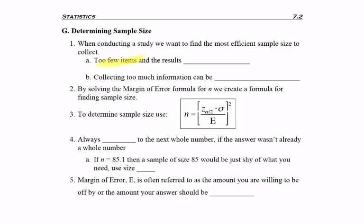If we collect too few items, the results won't be useful. And always more is better, except collecting too much information can be time consuming and costly. So we can't always collect more than we want.